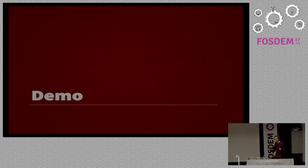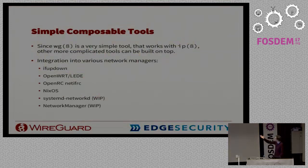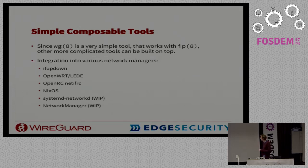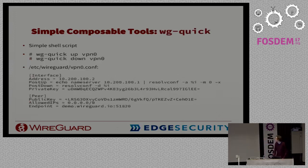From that very basic building block you can start layering some really neat things. The wg utility is a simple, composable tool that's already getting integration into various network management utilities. There's an if-up-down plugin, it's already in OpenWrt and LEDE with a nice LuCI web interface. OpenRC supports it with NetIFRC, it's part of the NixOS-style system, and there are works in progress to integrate it into systemd-networkd and NetworkManager. I also wrote a very simple shell script called wg-quick — quick and dirty bash — that I use daily for connecting to VPNs. You just run wg-quick up and wg-quick down.